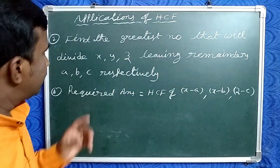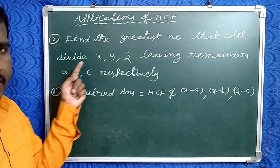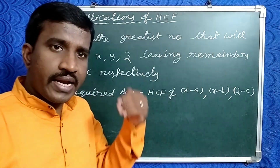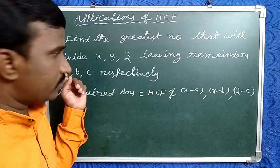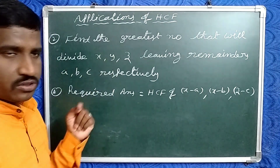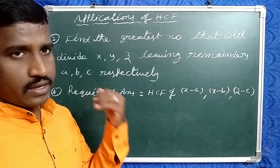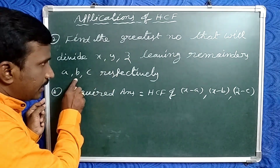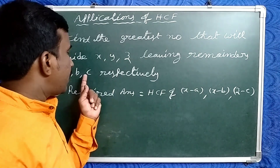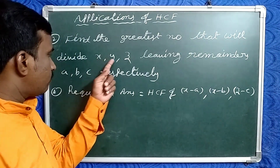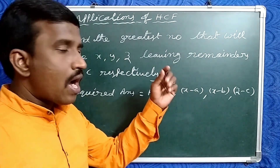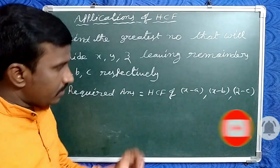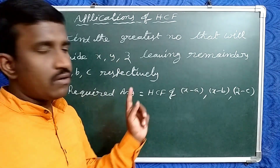Friends, now check the second model. In this model, find the greatest number that will divide x, y, z leaving remainders a, b, c respectively. In this case, first of all find the differences: x minus a, y minus b, z minus c. After finding the differences, find the HCF of those differences. That is the required answer. Therefore, the required answer is HCF of (x−a), (y−b), (z−c).